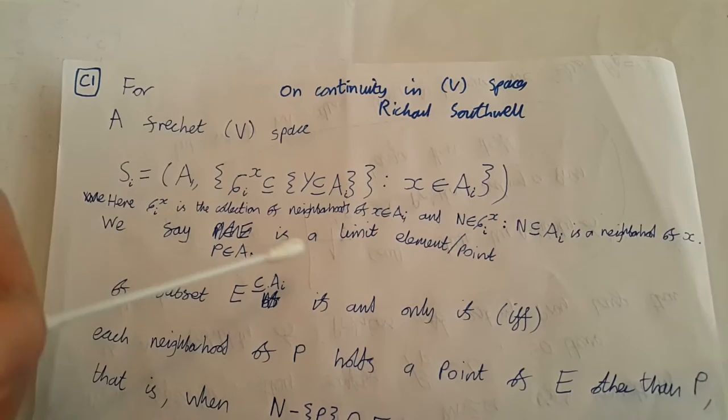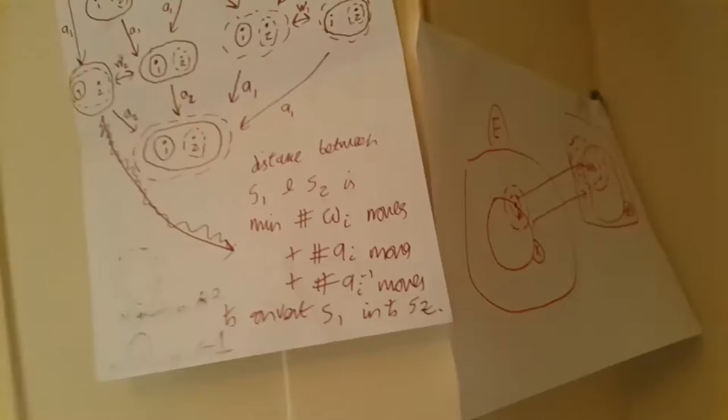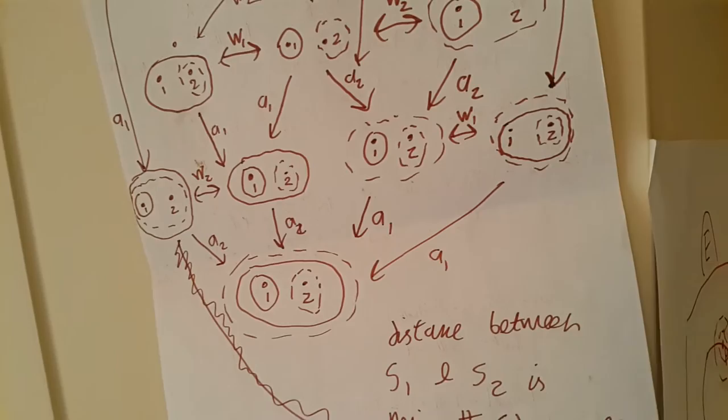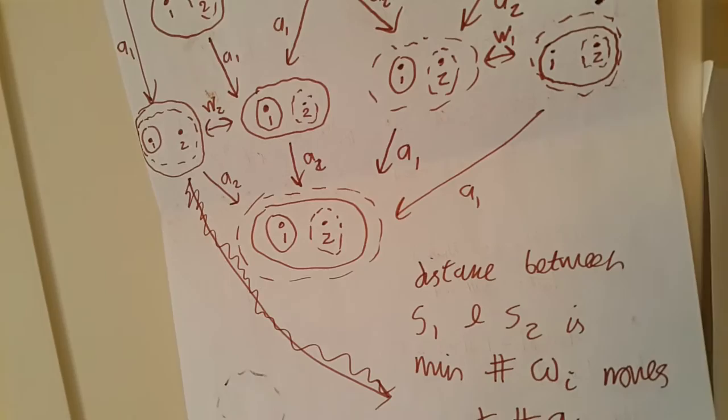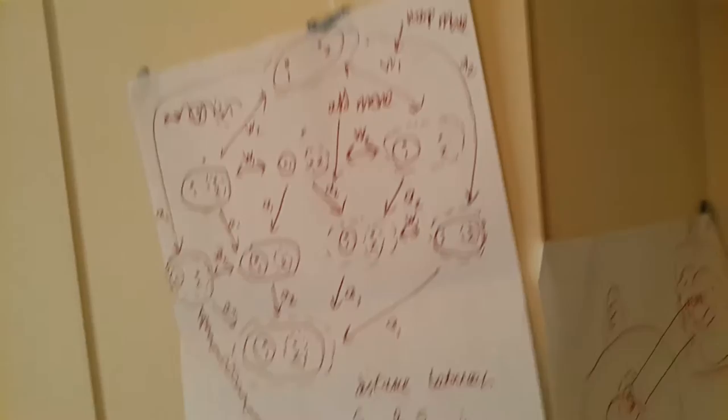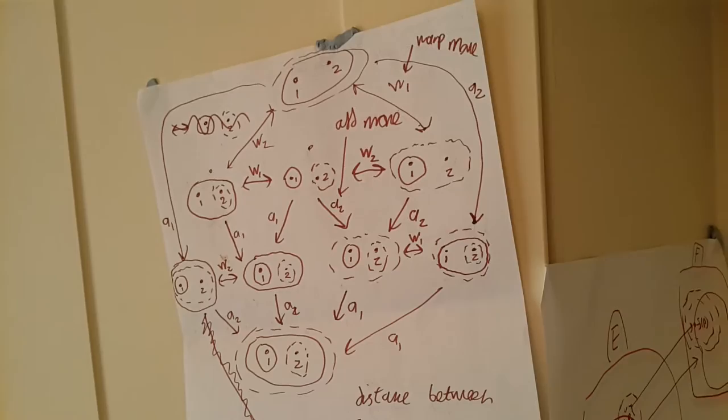That's pretty much all there is to it. You can draw some very simple diagrams. I've got some diagrams on my wall here of some Fréchet V-spaces on two points. Here, a would just be the set {1, 2}, and I'm using a solid line to denote the neighbourhoods of point number one, and a dotted line to denote the neighbourhoods of point number two. These are a load of the different Fréchet V-spaces on two points, and I've drawn how they relate to each other in some sense.